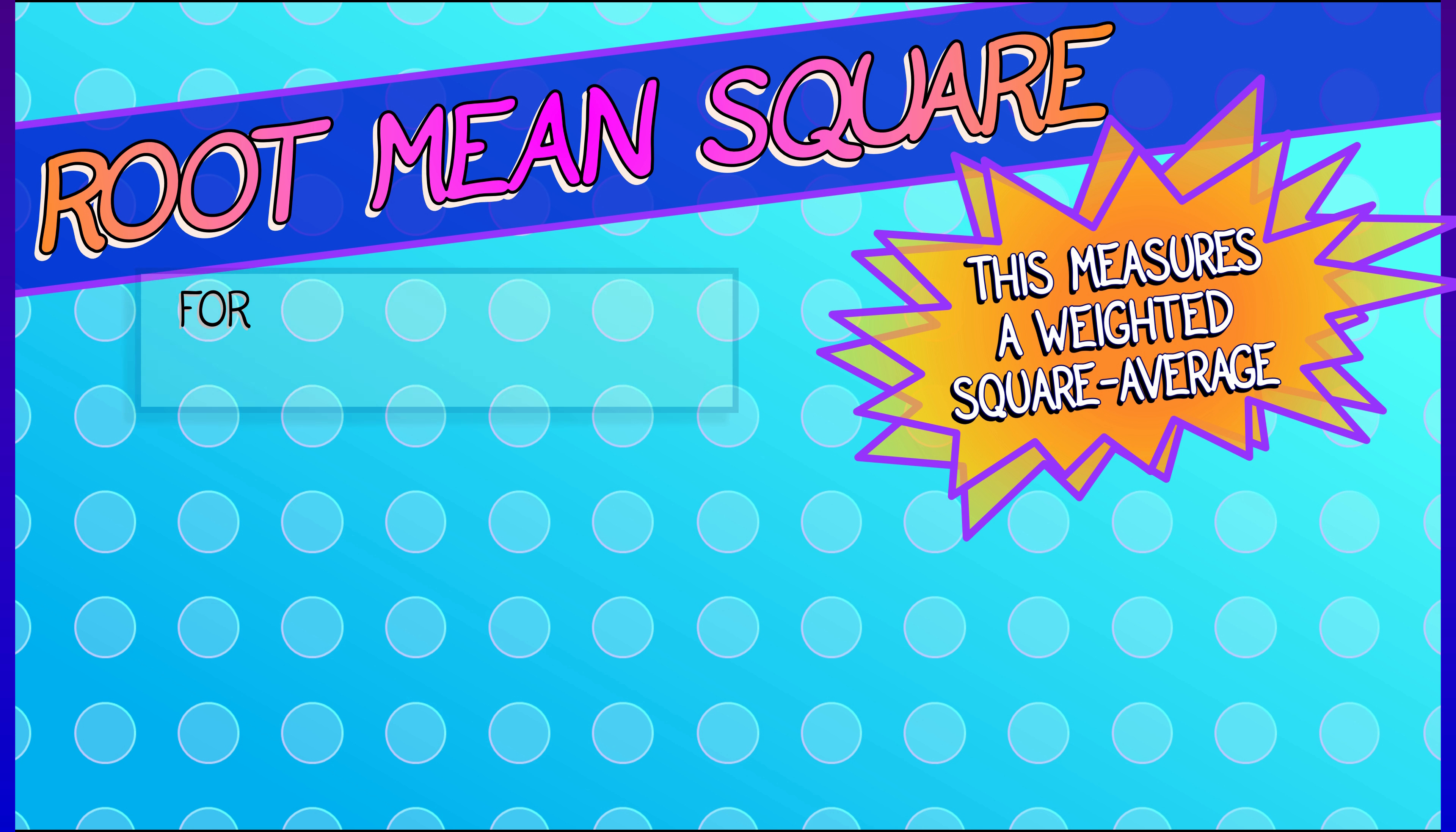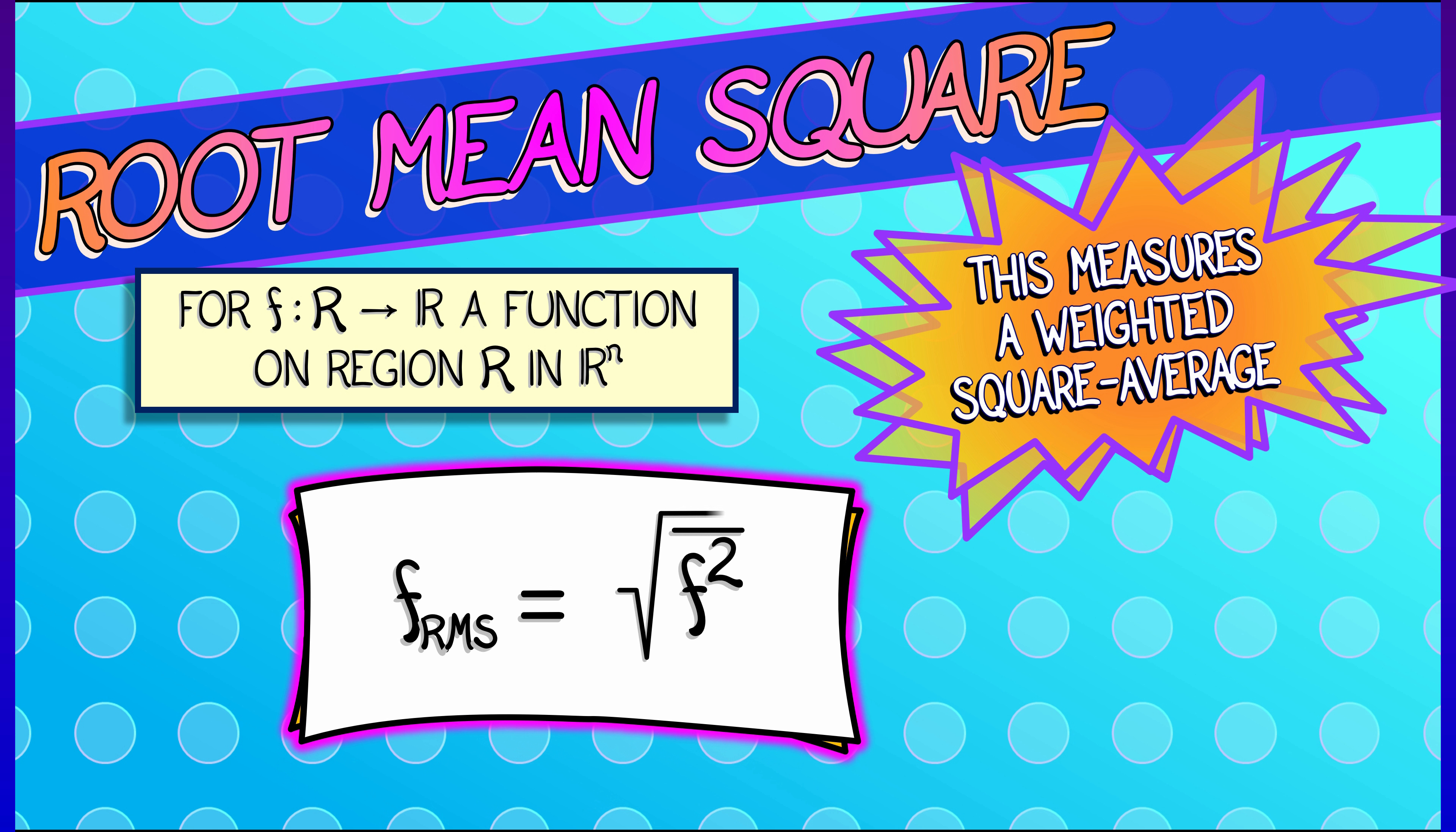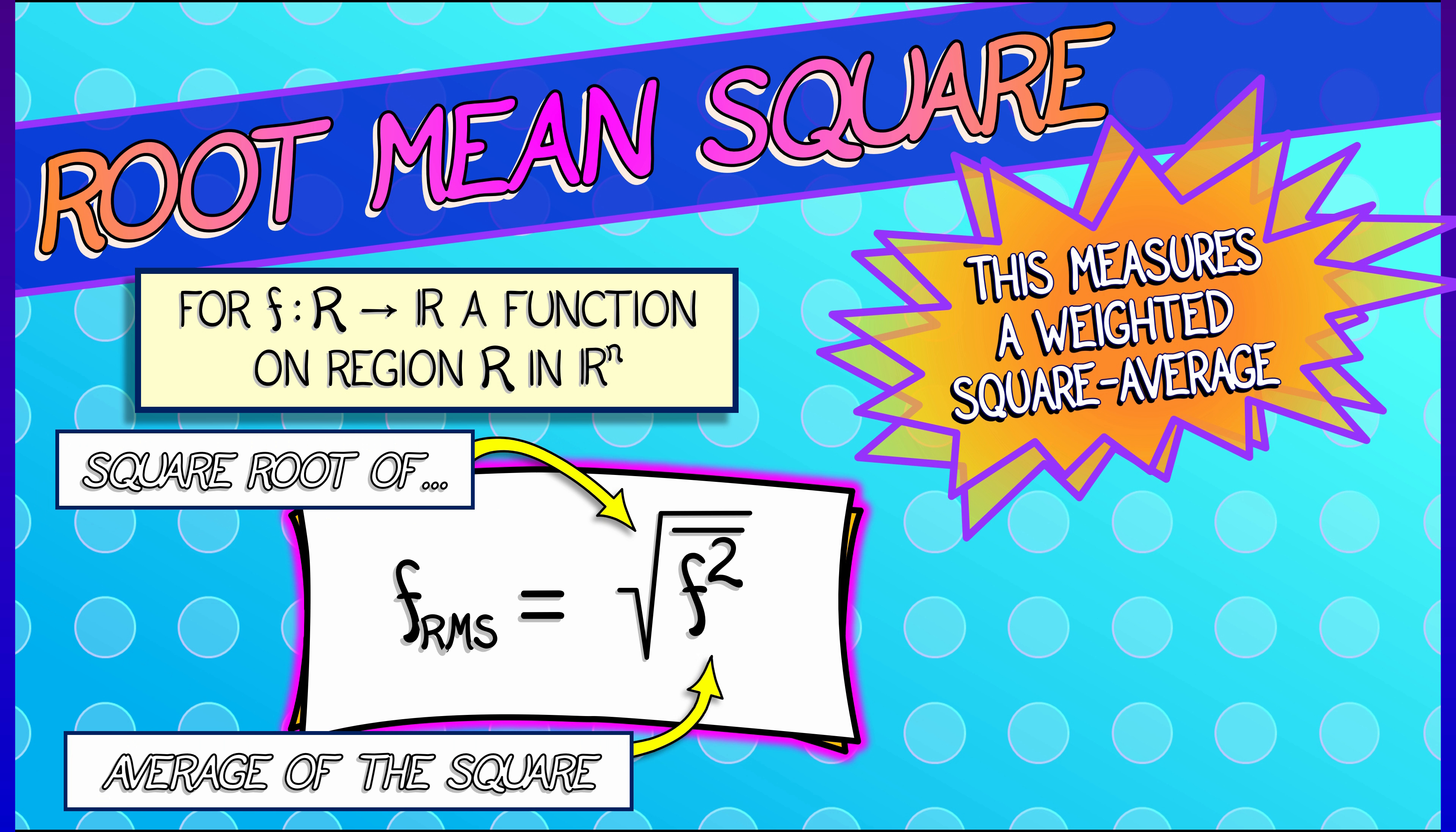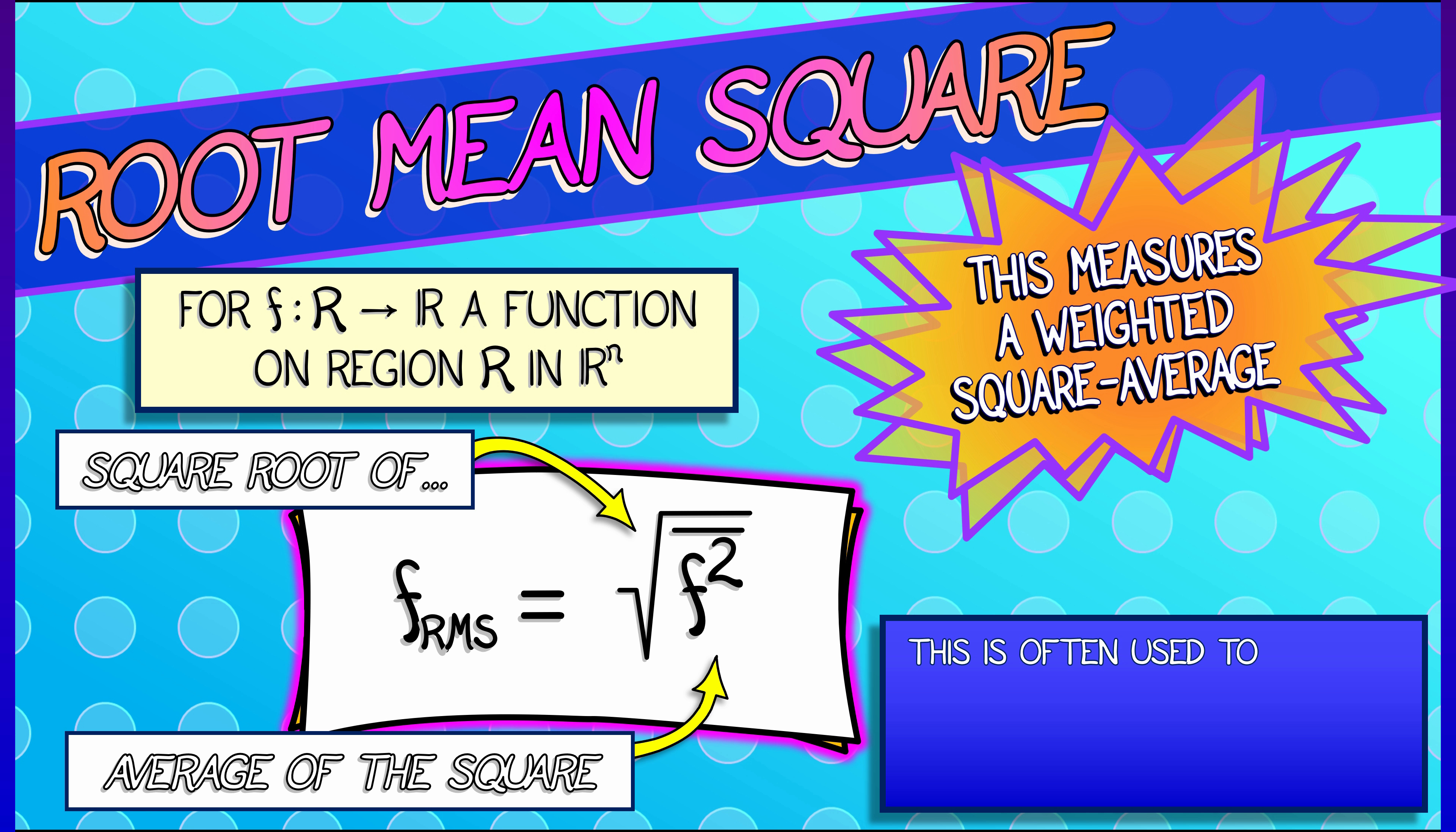This is a weighted square average. If I've got a function f on some region R in R^n, then the root-mean-square average is the square root of the average of the square of the function. So first you square f, then you average that in the normal way, and then you take the square root. That in the end is the root-mean-square.